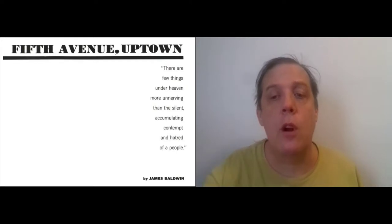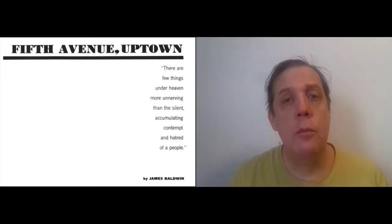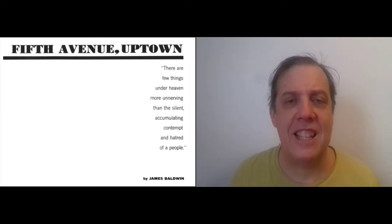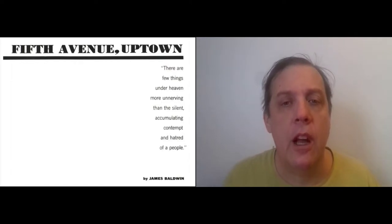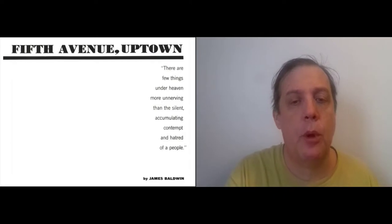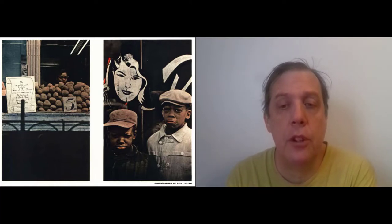He describes the neighborhood as being worn down and talks about people who have moved away. The pull quote here describes the effect that white America has had on his neighborhood. He says, "There are few things under heaven more unnerving than the silent accumulating contempt and hatred of a people." Baldwin is quick to admit that there are poor white neighborhoods too, but he says an itemized account of American failure does not console me and should not console anyone else. He also admits that some black people have escaped the ghetto and done well, but he is not impressed: "Not all of these people left the world better than they found it. The determined will is rare, but it is not invariably benevolent."